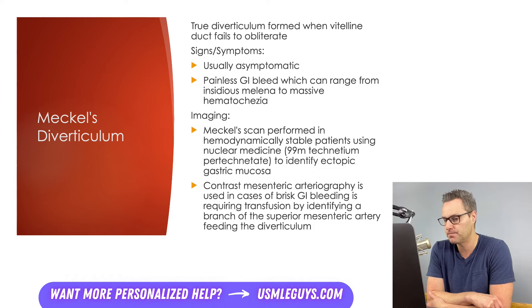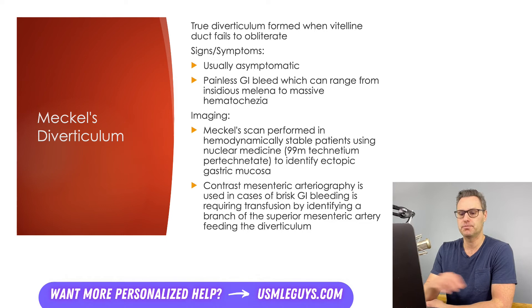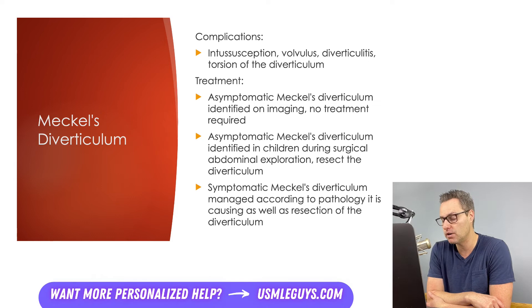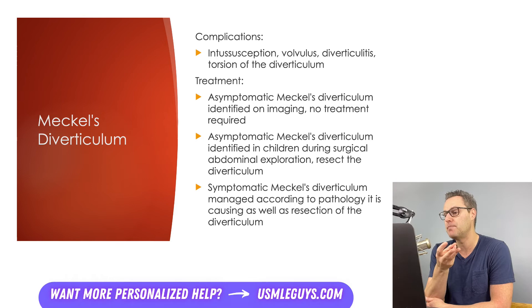The vast majority of patients are asymptomatic. But when ectopic gastric mucosa is present in the diverticulum, ulceration of the small bowel downstream of the Meckel's diverticulum can occur due to acid secreted from that tissue. Aside from this painless bleeding, complications may include intussusception, volvulus, diverticulitis, and torsion of the diverticulum. These complications present differently than a painless GI bleed and can have presentations similar to what you'd expect without Meckel's involvement.